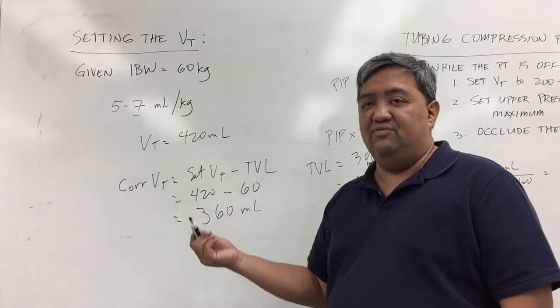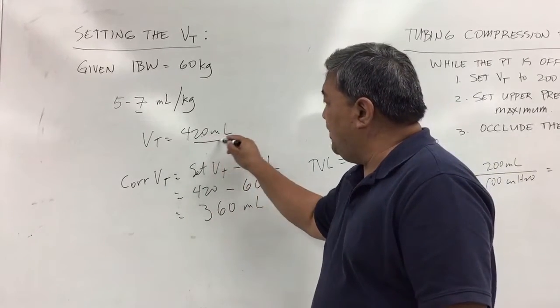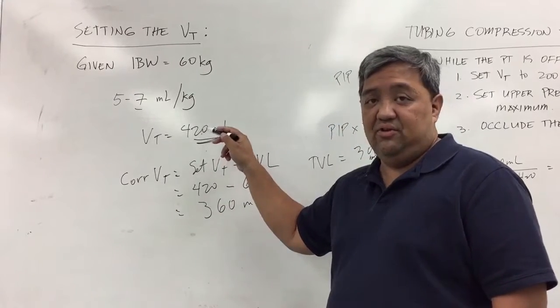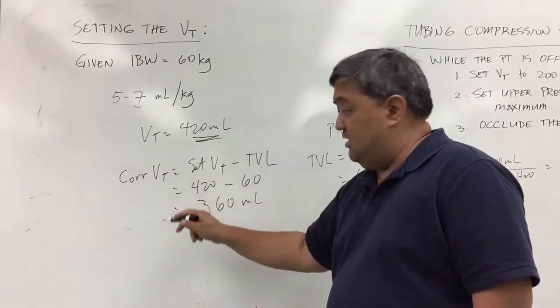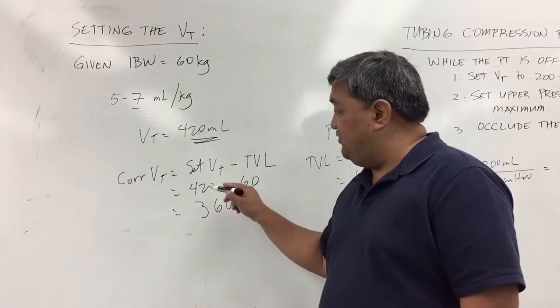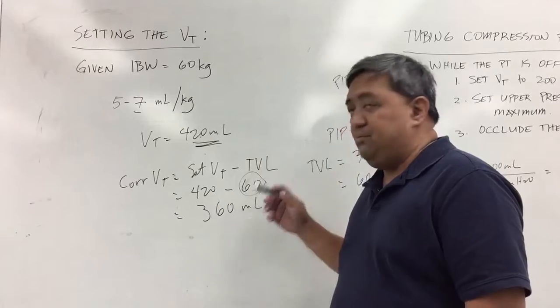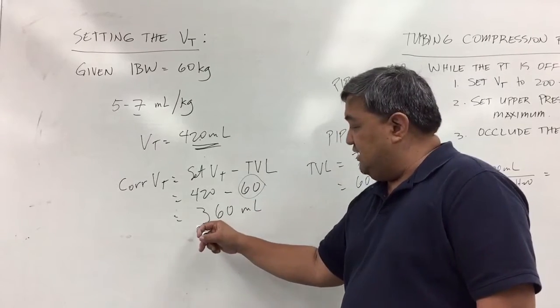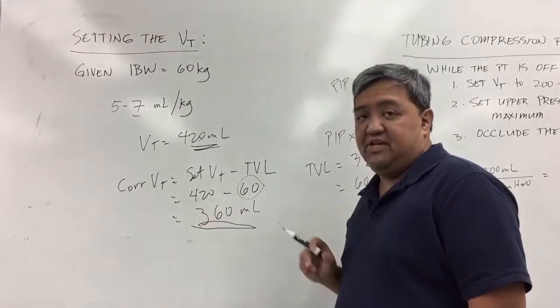Your set tidal volume, if you put in 420, your return volumes may not get the 420 back. It may even get something as low as 360 just because of the 60 ml tubing volume lost in the circuit. This is the corrected tidal volume that the patient is receiving.